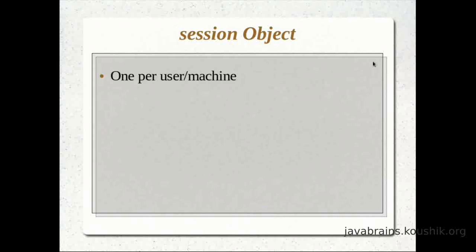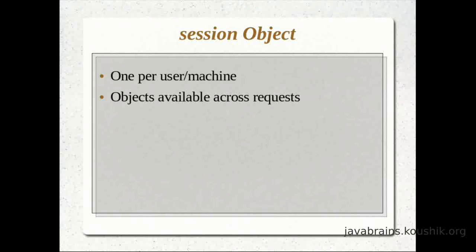A session object is created per user or machine — we will elaborate on this in a bit more detail shortly. At a very high level, for every user accessing the application on a browser, there will be one session object created and provided to us by Tomcat. Objects are available across requests by using the session object, so that you can persist data across different requests for that same user and machine.